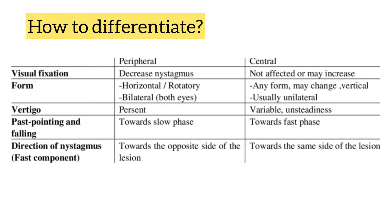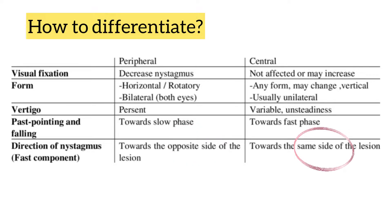Peripheral nystagmus decreases on visual fixation whereas central nystagmus is not affected. The direction of nystagmus is to the opposite side of the lesion in peripheral nystagmus, and it is towards the same side of the lesion in central nystagmus.